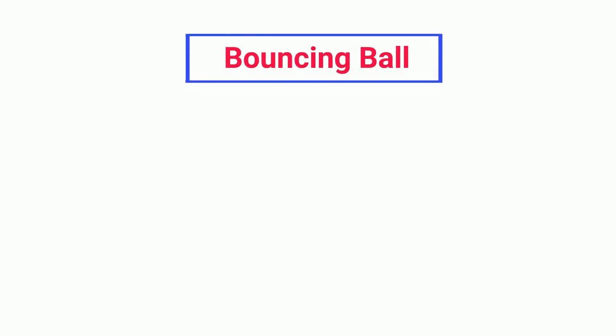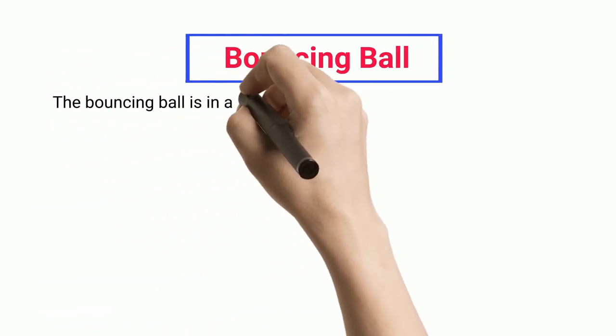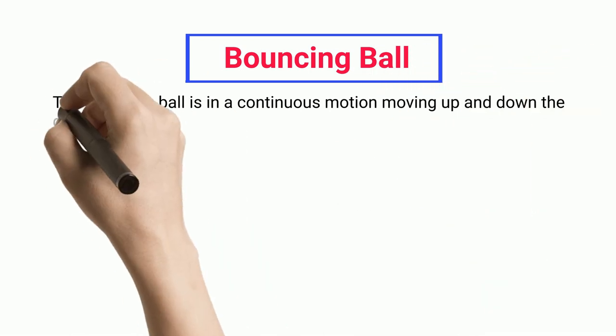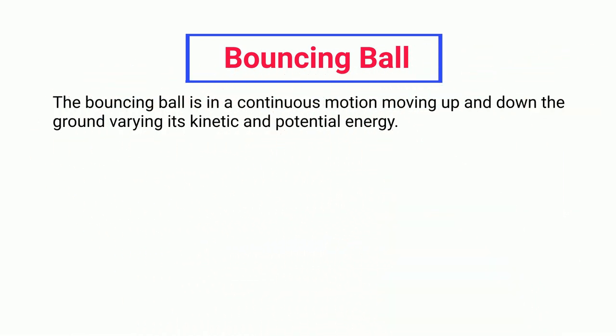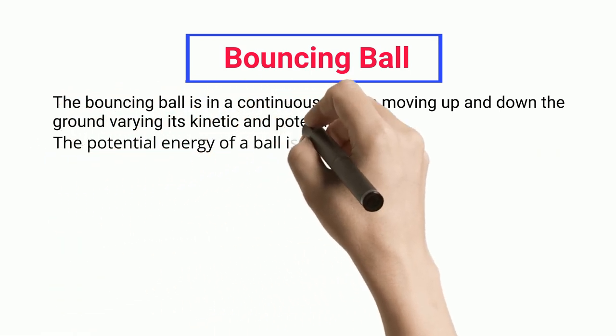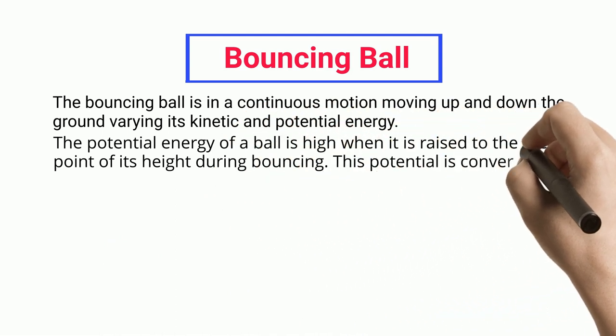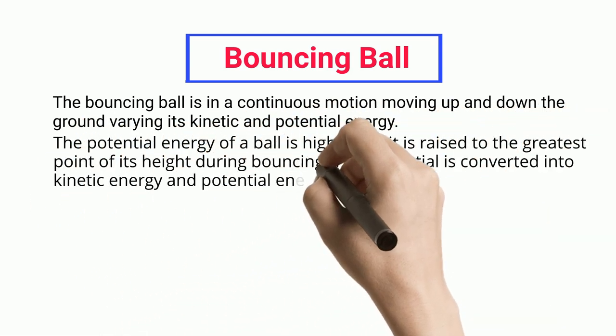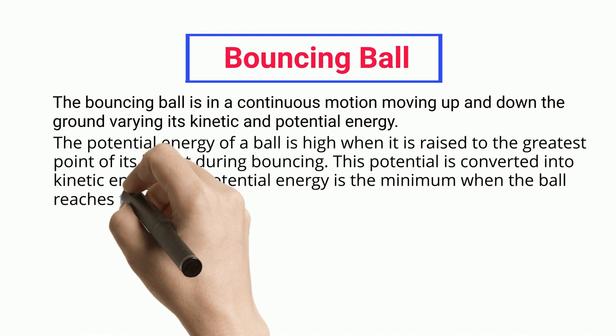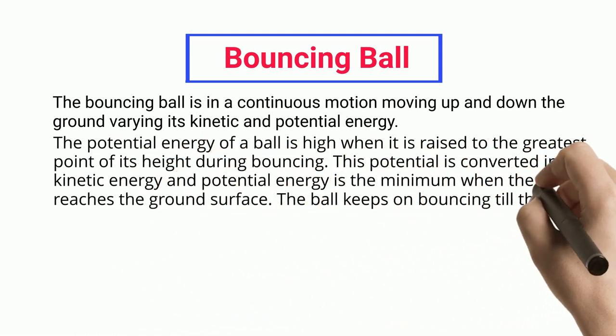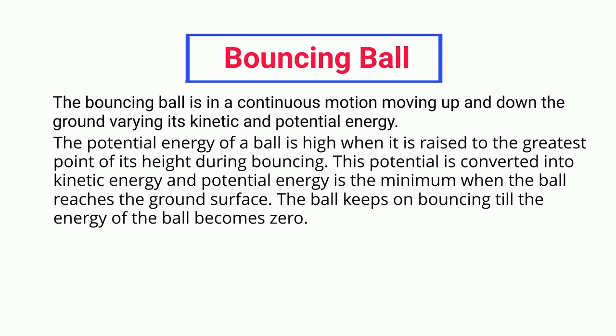Bouncing Ball. The bouncing ball is in a continuous motion moving up and down the ground, varying its kinetic and potential energy. The potential energy of a ball is high when it is raised to the greatest point of its height during bouncing. This potential is converted into kinetic energy, and potential energy is the minimum when the ball reaches the ground surface. The ball keeps on bouncing till the energy of the ball becomes zero.